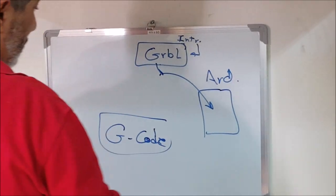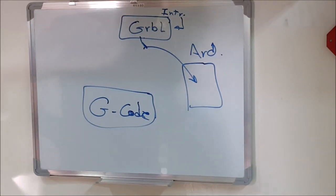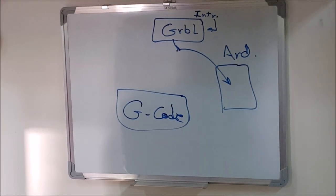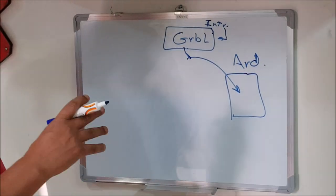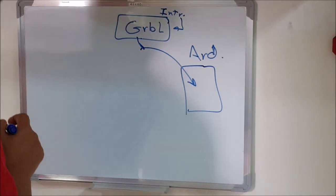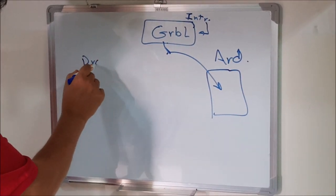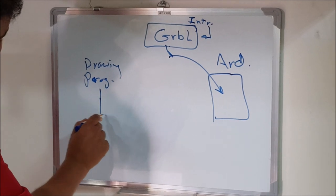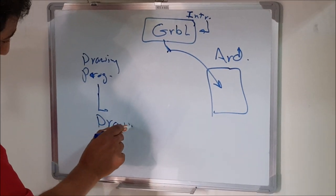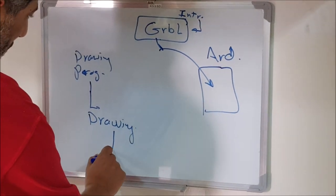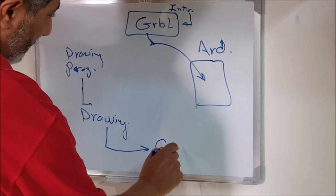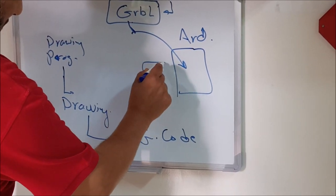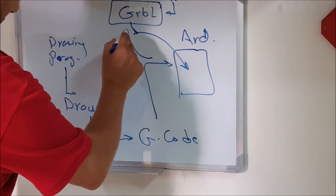The interpreter handles the G-code, but where do we get the G-code from? We don't start with G-code — we have drawings. I draw something in a program like ArtCam or any kind of drawing program. That drawing program produces a drawing as output. We then need to convert that drawing into G-code, and this G-code is sent to the Arduino.